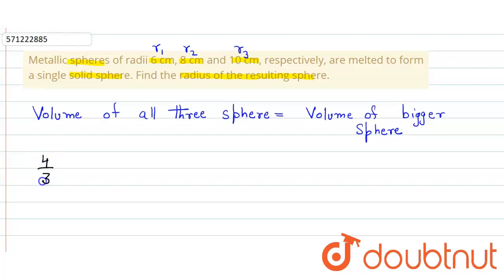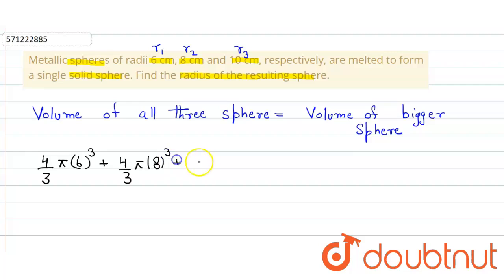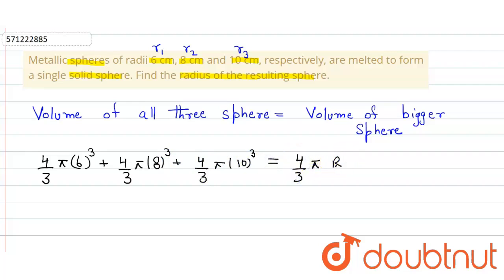So here this is (4/3)πr1³ = (4/3)π(6)³ plus (4/3)π(8)³ plus (4/3)π(10)³, and that equals (4/3)πr³, where r is the radius of the bigger sphere.